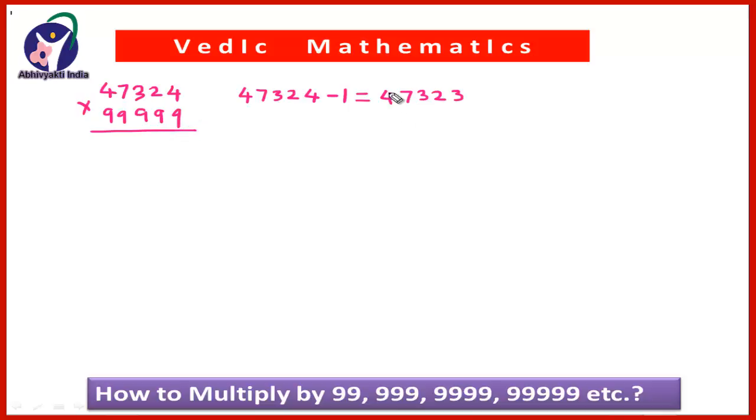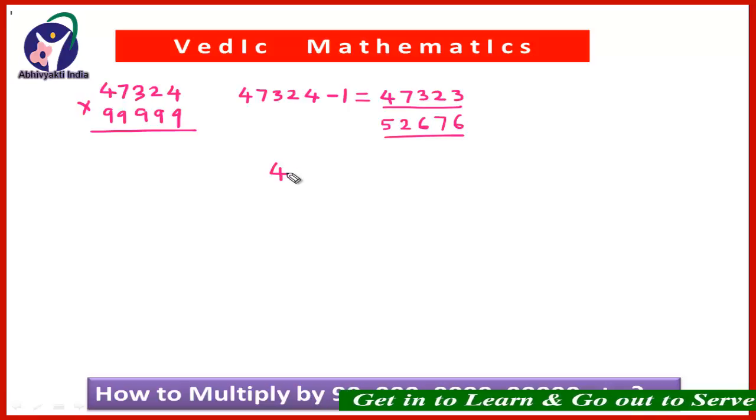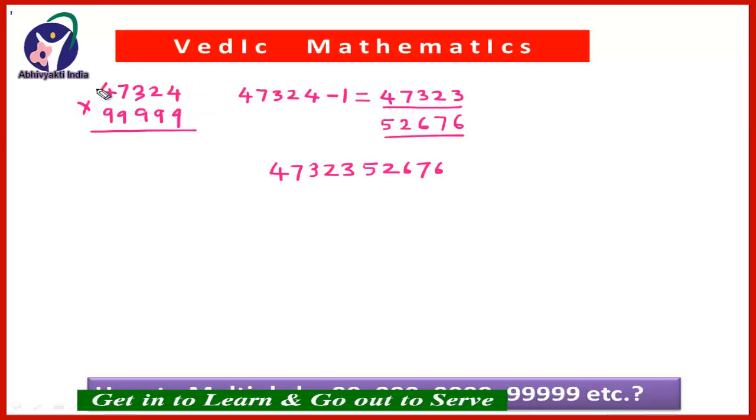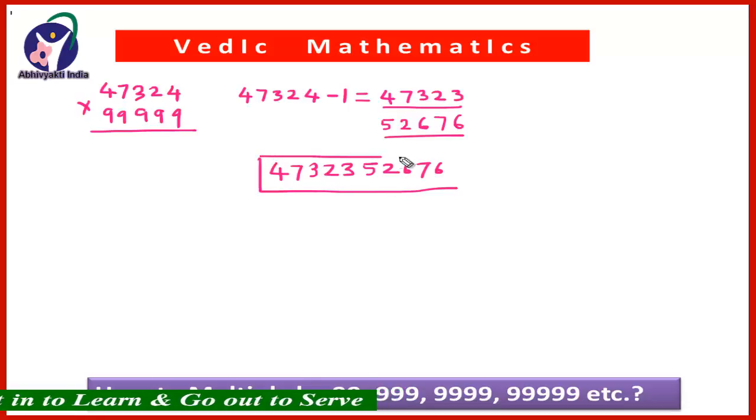Then just go on adding a number to each digit so that it will become 9. So 4 plus 5 that will be 9, 7 plus 2 that will be 9, 3 plus 6 that will be 9, 2 and 7 is 9, and 3 and 6 is 9. So you have got these 2 numbers. So your answer will be 47,323 and 52,676. So if you multiply 47,324 by 99,999, you get the product this much. You can solve this within seconds.